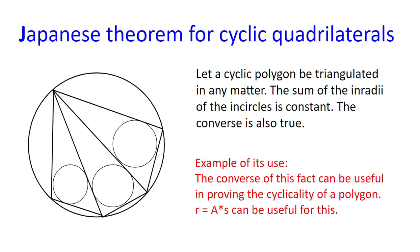Because if we know that the sum of the inradii is independent to the triangulation of a polygon, the polygon is cyclical. And we can also use the fact that the inradii equals the area of the triangle divided by its semi-perimeter to help us do this.